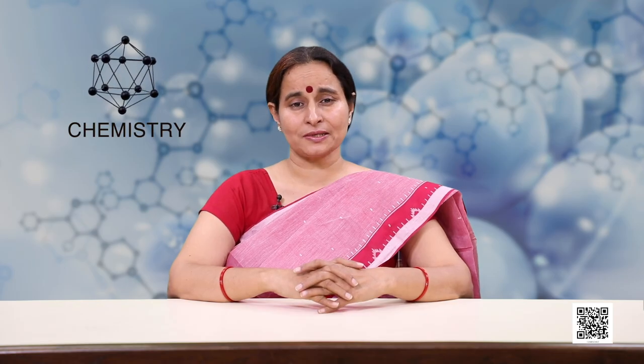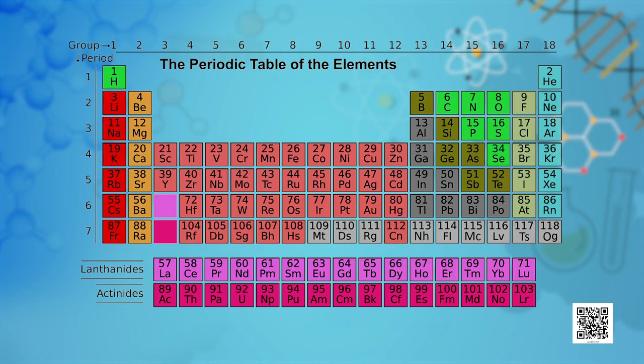Different elements present in group 16 are oxygen, sulphur, selenium, tellurium, polonium and livermorium. They are known as the group of chalcogens. Oxygen is the most abundant of all the elements on earth.